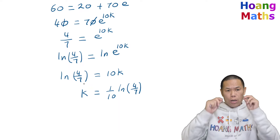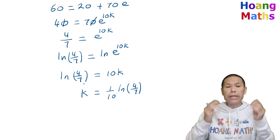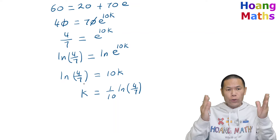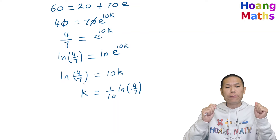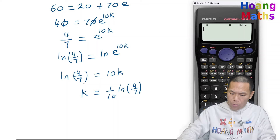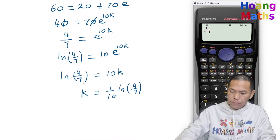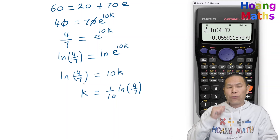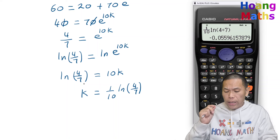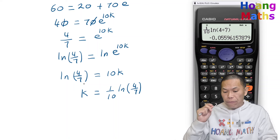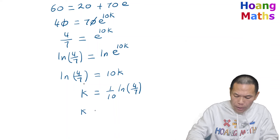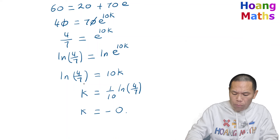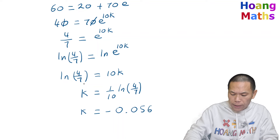Using a calculator — 1 over 10 times ln of 4 divided by 7 — correct to 4 decimal places, k equals negative 0.0560.